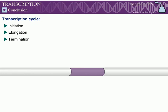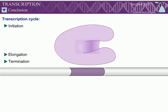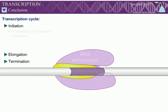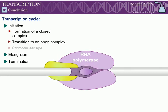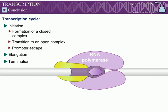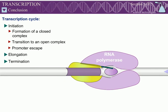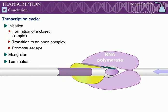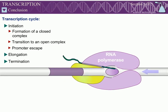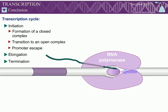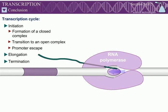Transcription initiation can be divided into three steps: binding of RNA polymerase to form a closed complex, transition to an open complex, and promoter escape. In bacteria, an initiation factor called sigma recognizes various sequences within promoters.